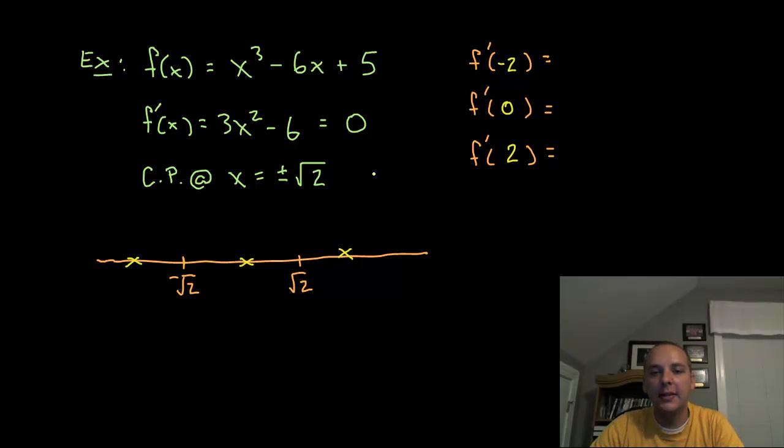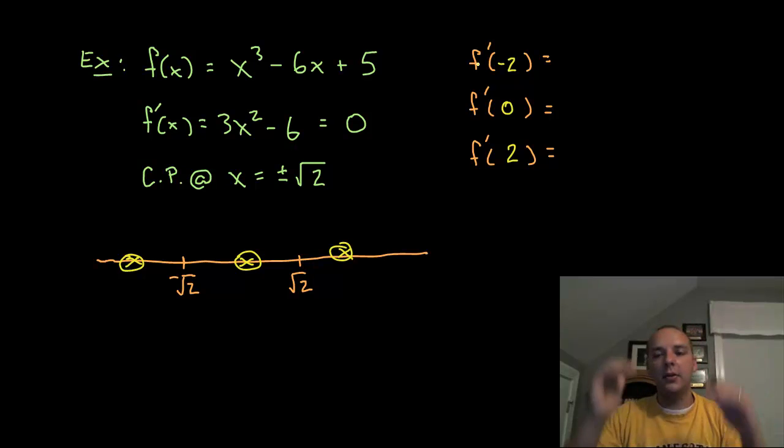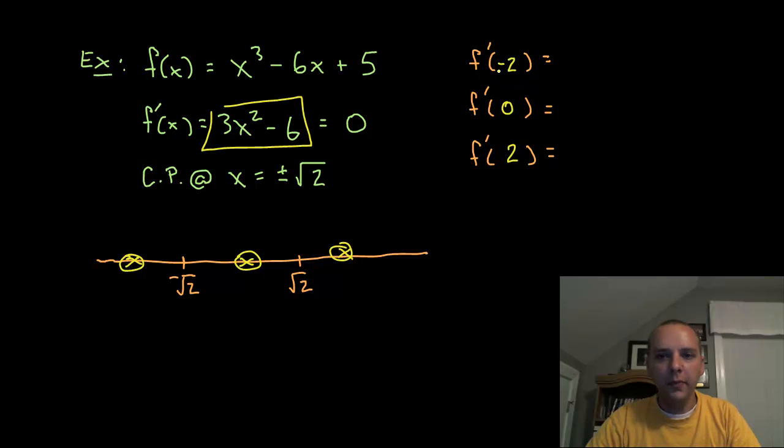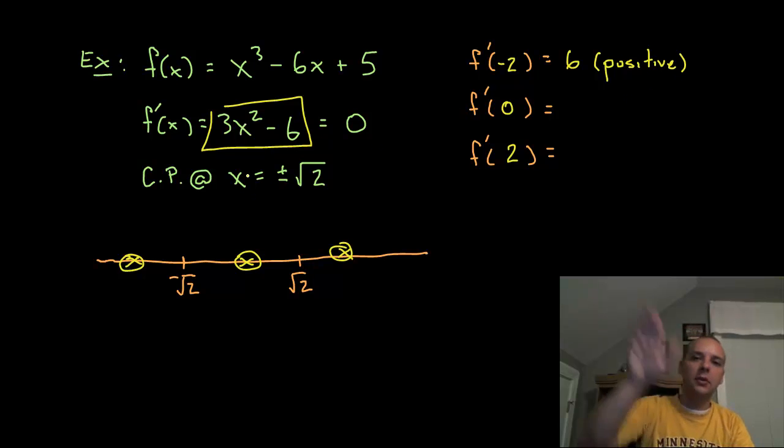So what I'm going to do now is pick something less than -√2, between -√2 and √2, and something after √2. How about -2 and 0 and 2, and I'm going to take these test points, these little sample points, you could have picked different ones, and I'm going to plug them in the derivative, not the original. I don't care what the y values are, I don't care what the heights are, I'm interested in what the slopes are doing. Is the function increasing or is it decreasing? So let's take these and plug them in. f'(-2) squared is 4, 4 times 3 is 12, 12 minus 6 is 6, but honestly I don't care that it's 6, that doesn't interest me. I'm interested in the fact that it's positive. That's really what's interesting, because a positive slope means that the function is increasing.